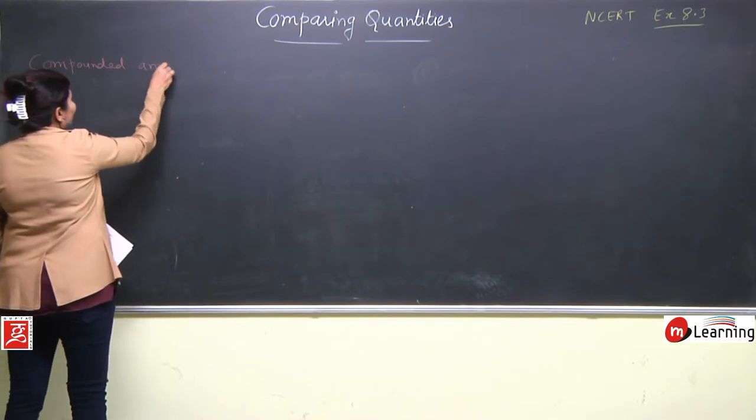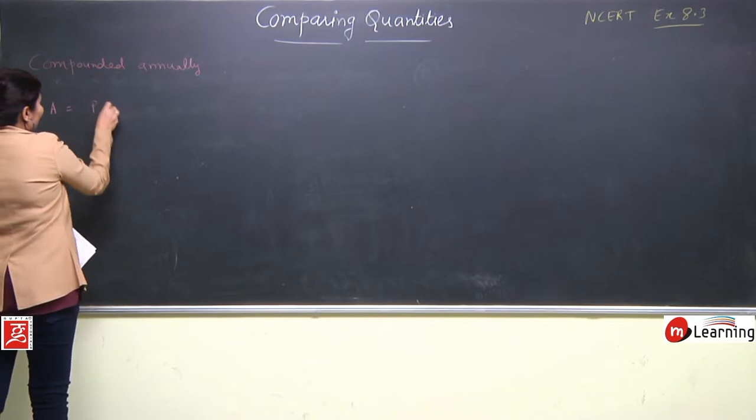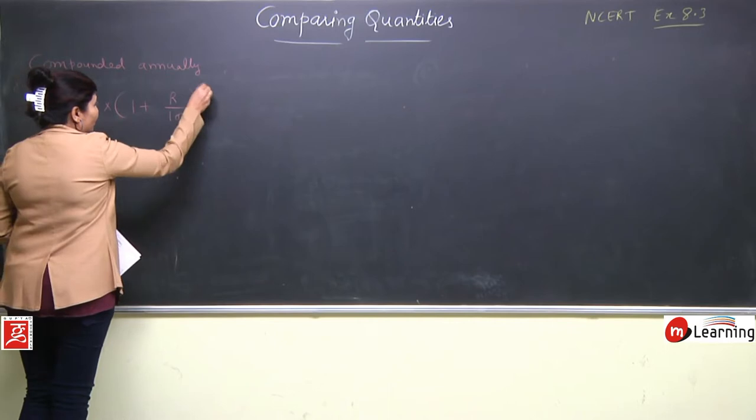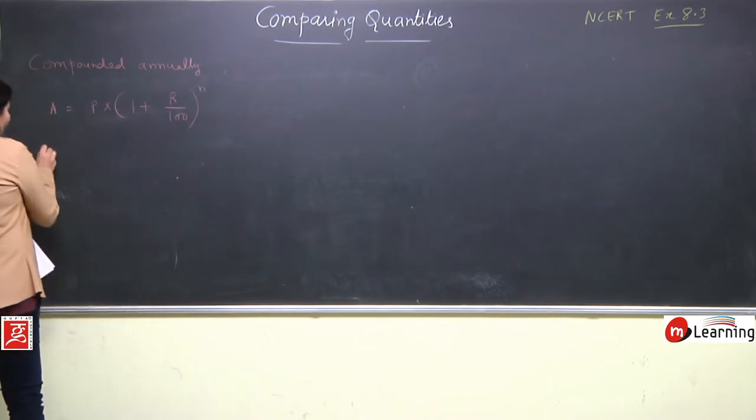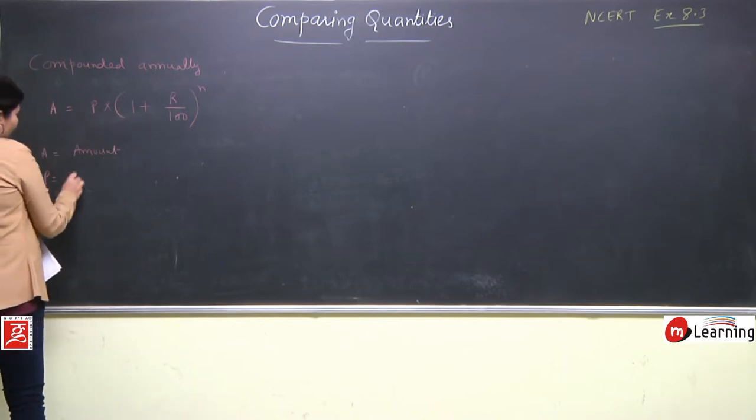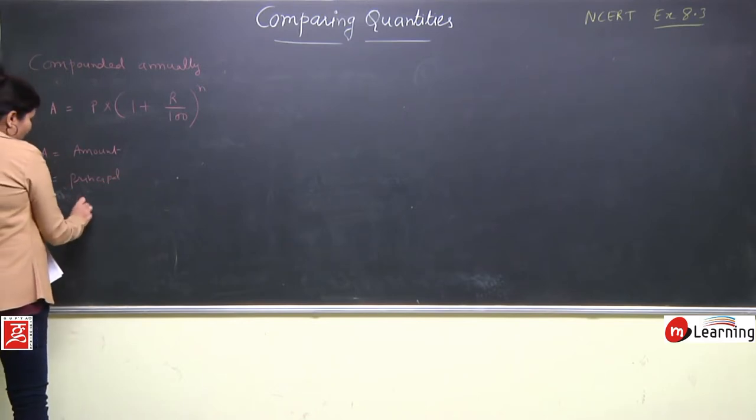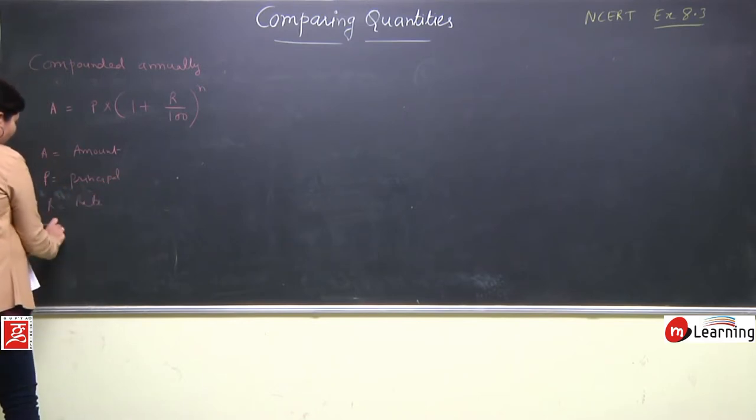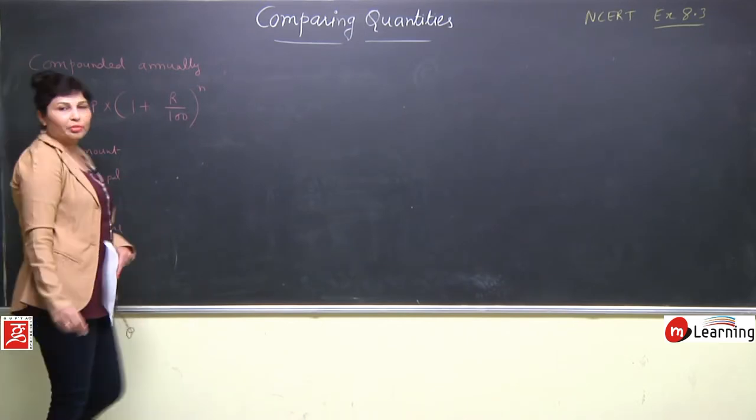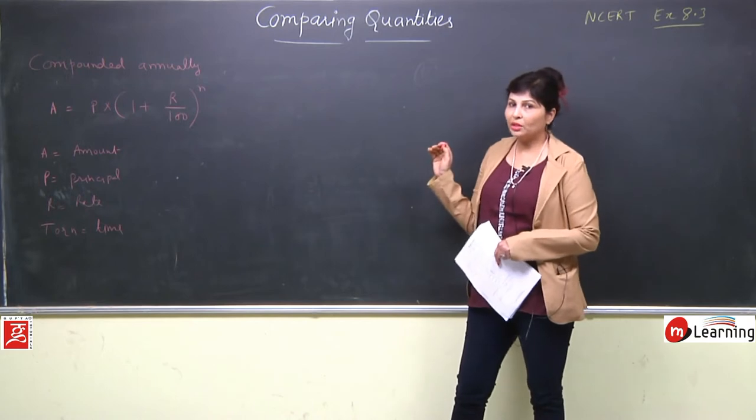When compound interest is calculated annually, the formula is A = P(1 + r/100)^n, where A is amount, P is principal, r is rate in percent, and t or n is time in years or months.